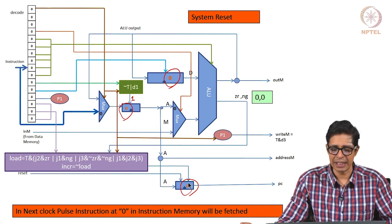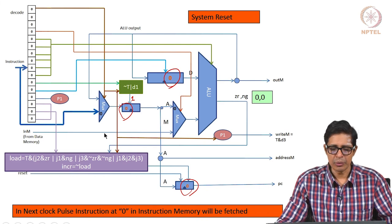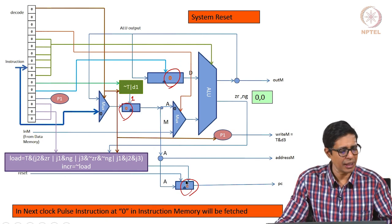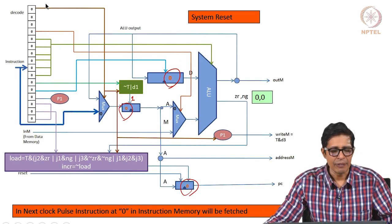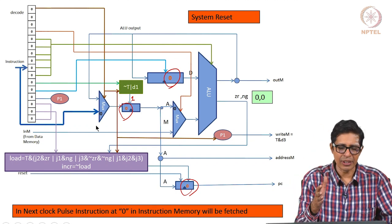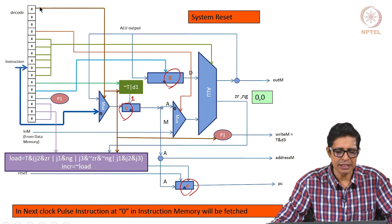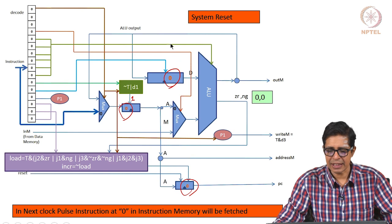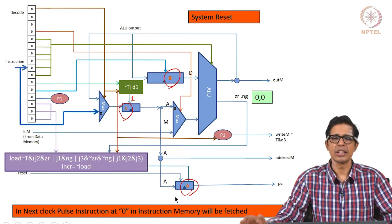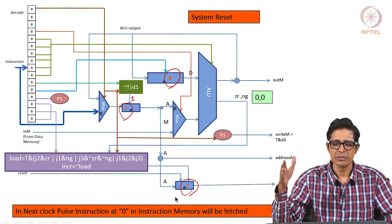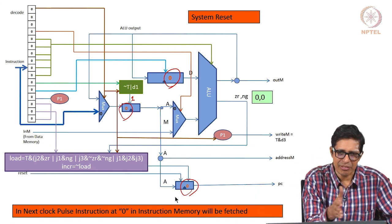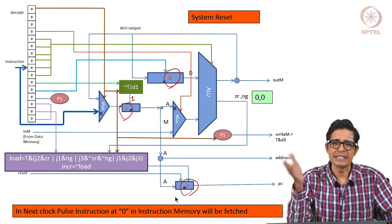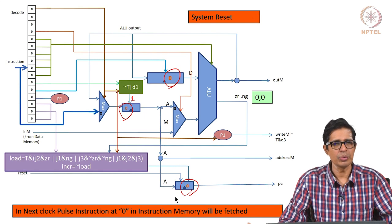The moment you remove reset, since the PC is pointing to 0, the instruction at address 0 in the instruction memory will be fetched. On a tick of the clock the instruction will be fetched — these are 16-bit instructions. Then on the tock of the clock, the results will be stored in the destination. The clock goes tick-tock: on tick the instruction is fetched, on tock the results are stored.